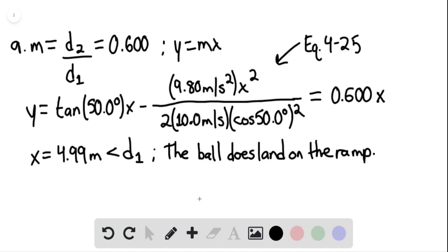So for part b, using the value of x found in part a, we find that y equals mx. This would be equal to 0.600 multiplied by 4.99 meters, giving us 2.99 meters approximately.